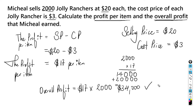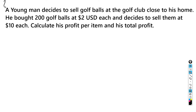The total profit Michael made is $34,000, which is pretty good! Maybe you guys should start selling Jolly Ranchers and making some extra money. I actually used to sell Jolly Ranchers in high school, so it's a great example to show how you can calculate your profit when you buy and sell items.